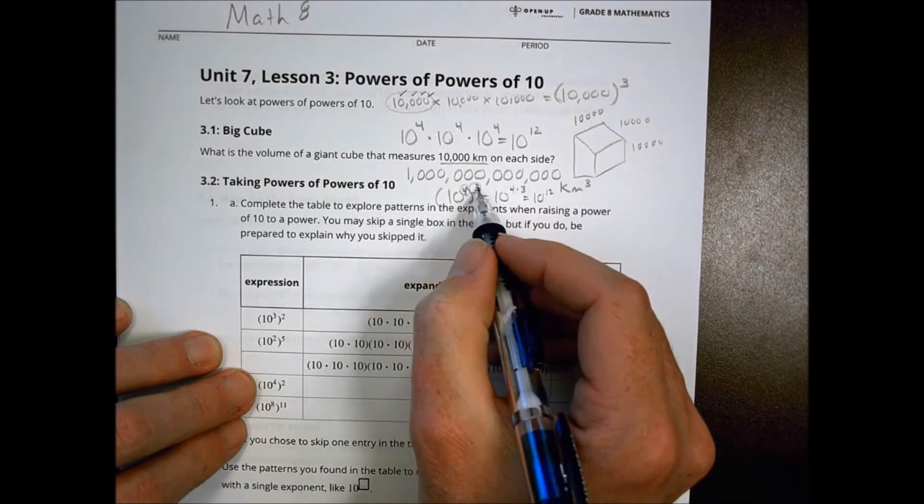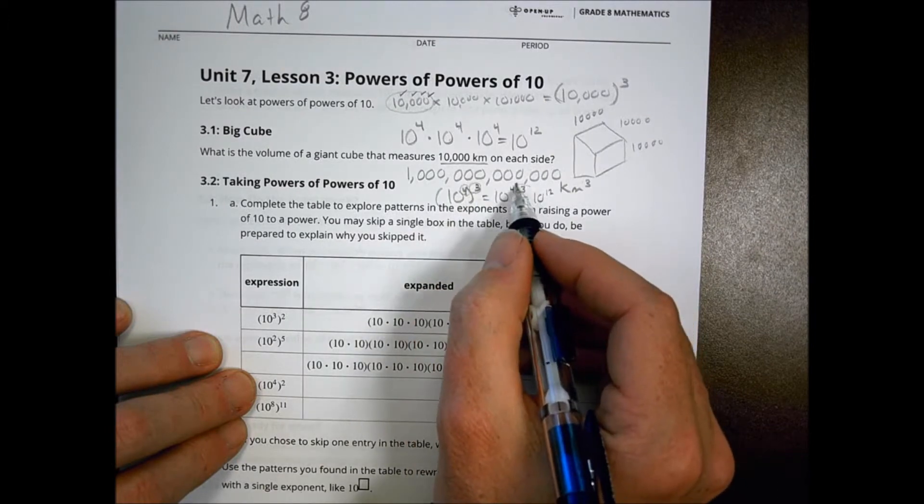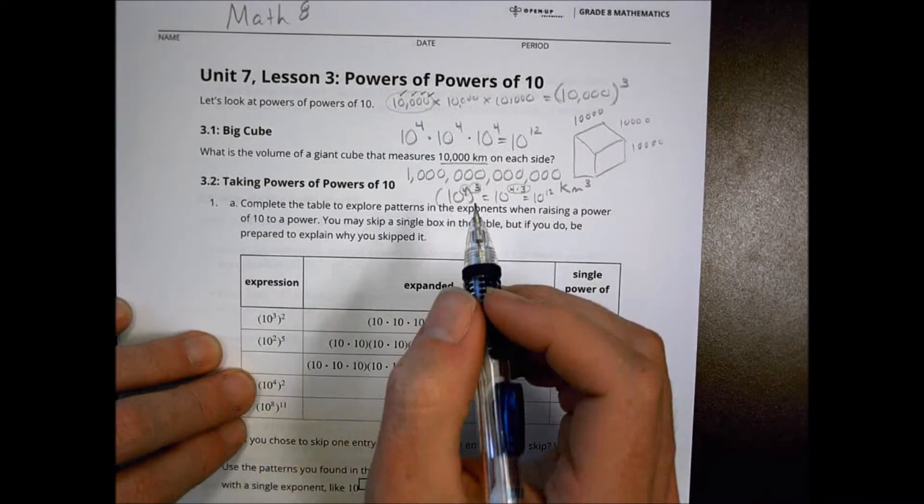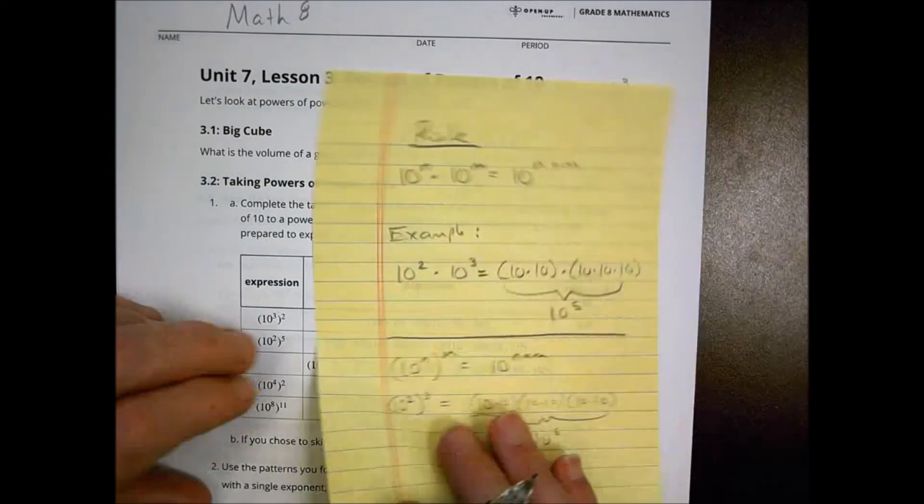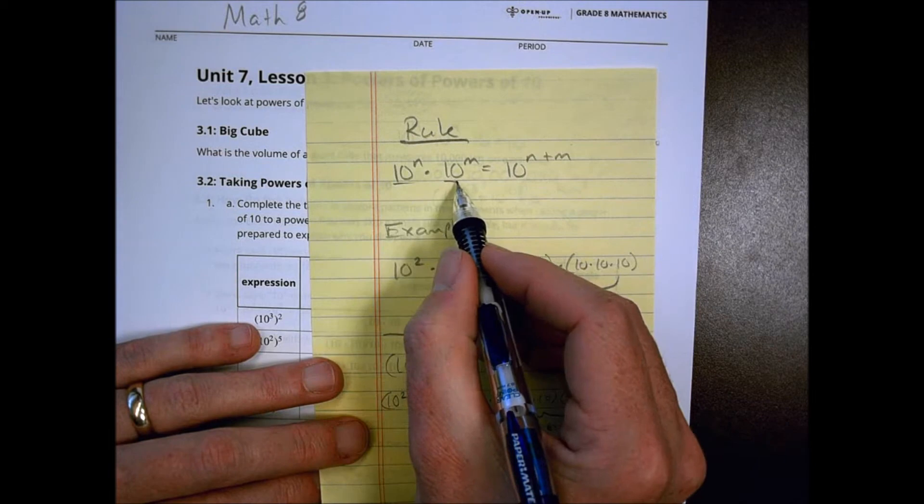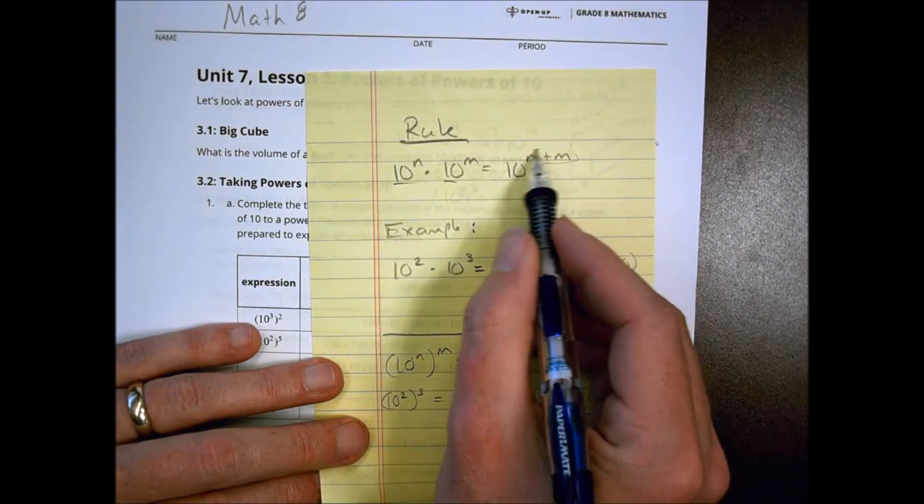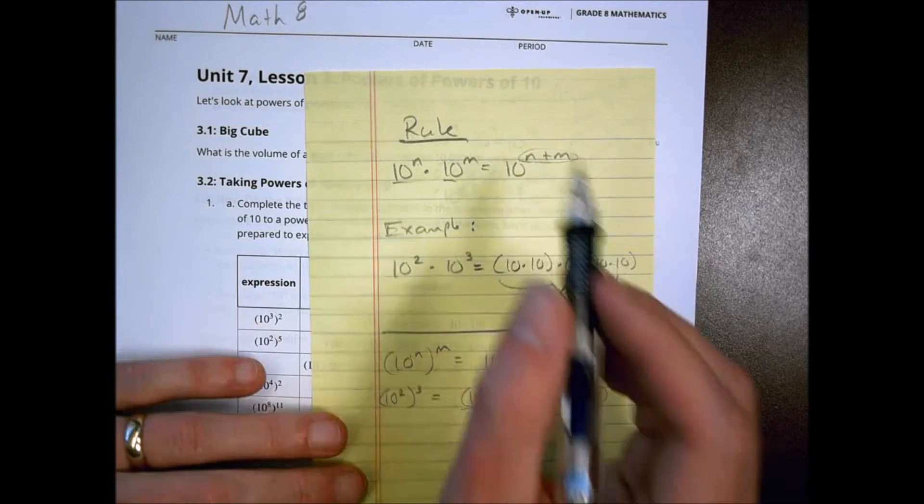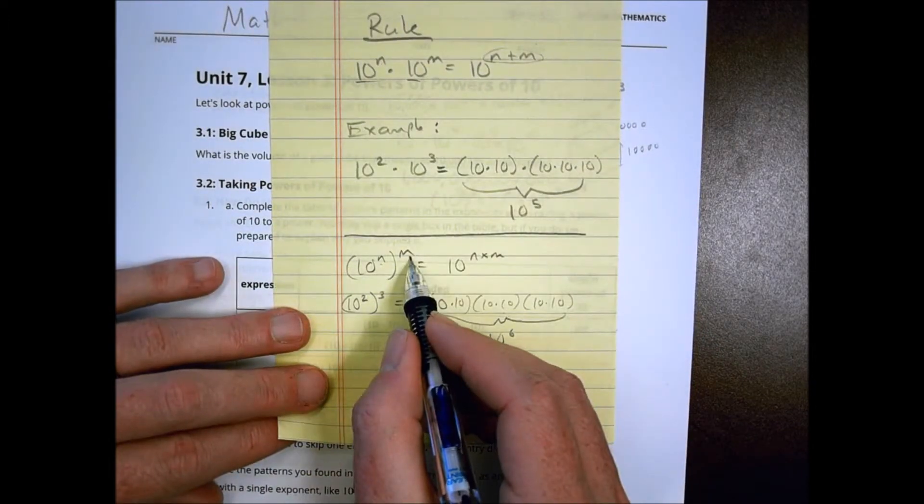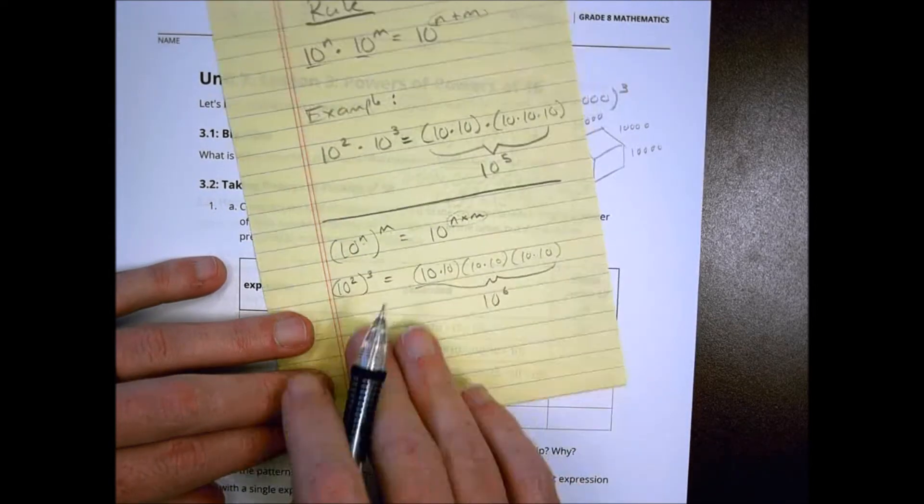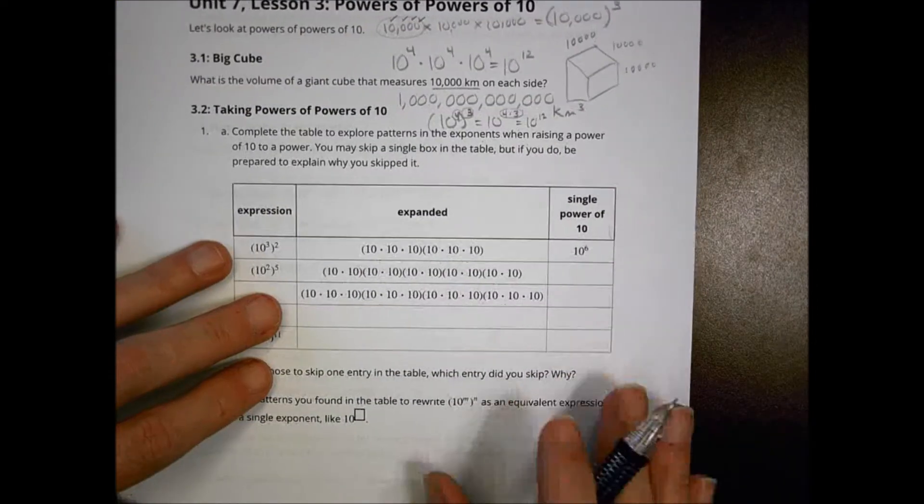So when I have a power to a power, I'm actually going to multiply those together to get a new power. In our prior lesson, we talked about when I multiply things to the same base, the powers then add together. What we're looking at today is that when I have a power to a power, now I'm actually going to multiply those together.